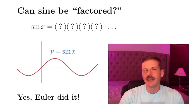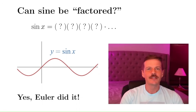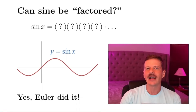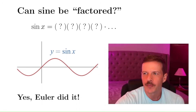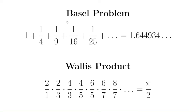And really it was what he did with his factorization which was to solve the so-called Basel problem. Now the Basel problem was the problem of finding the sum of this series, and notice here that the denominators are the perfect squares 4, 9, 16, 25 and so forth.